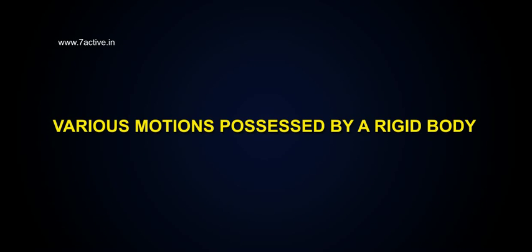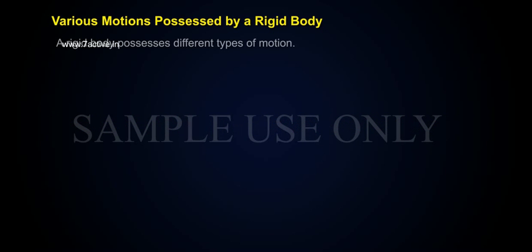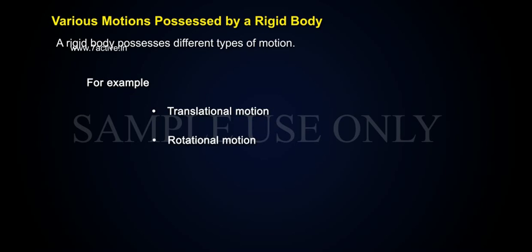A rigid body possesses different types of motion, for example: translational motion, rotational motion, and a combination of translational and rotational motion.